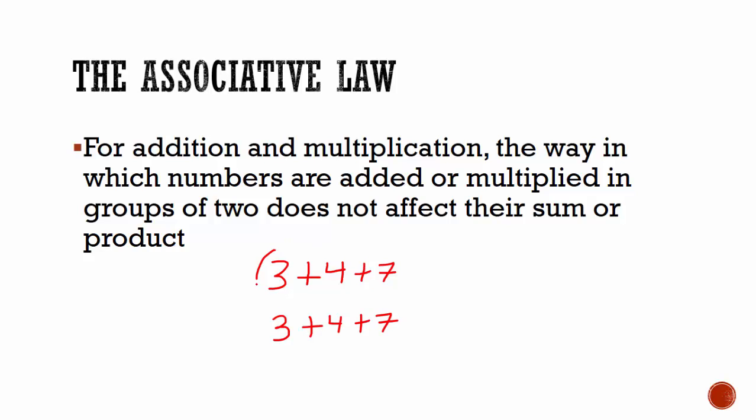We are saying that if we add the first two numbers first or we add the second and third numbers first, it does not affect the result. 3 plus 4 is 7. We work out the brackets. 7 plus 7 is equal to 14.